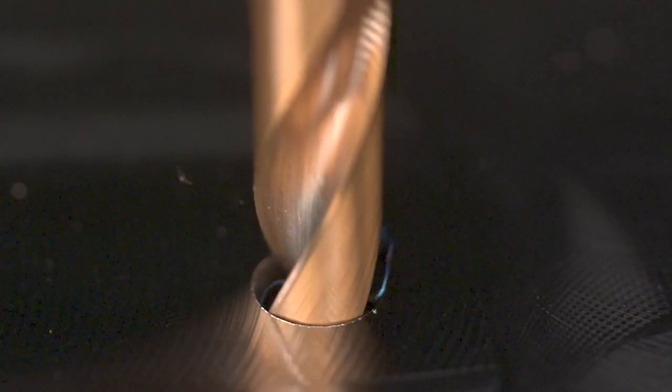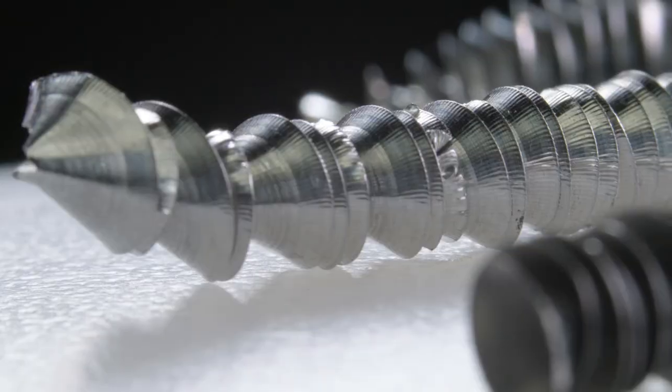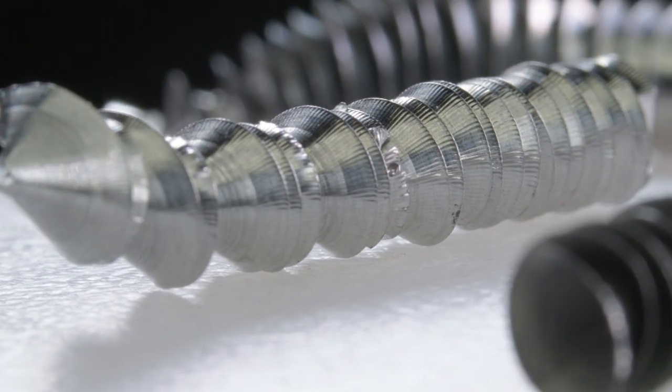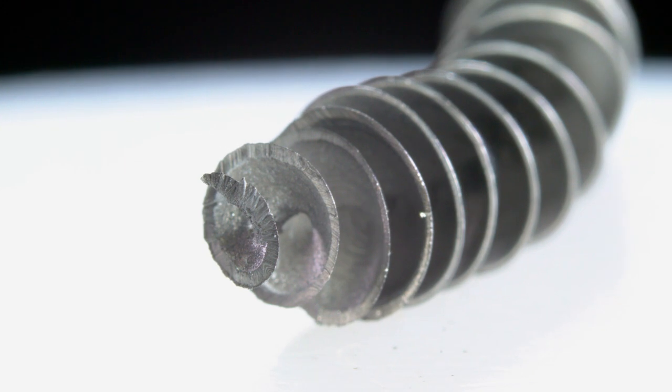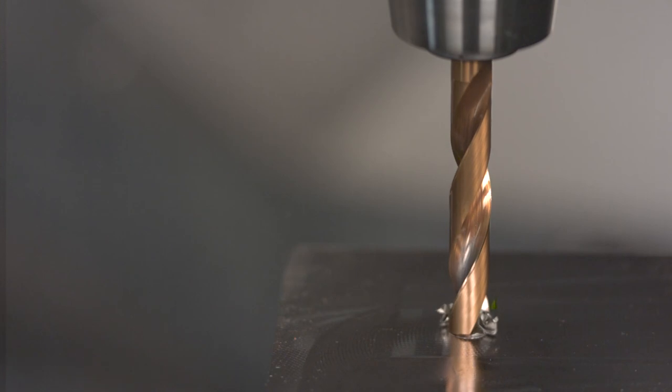Chip formation is acceptable when chips can be evacuated from the drill without disturbance. The start chip from entry into the workpiece is always long and does not create any problems. Chips are formed from the center to the outer corner of the drill.